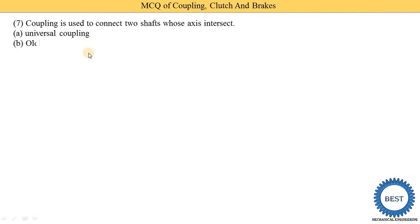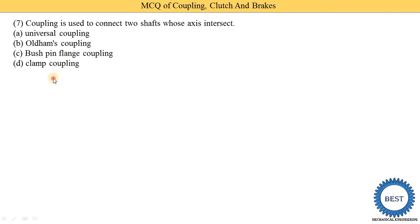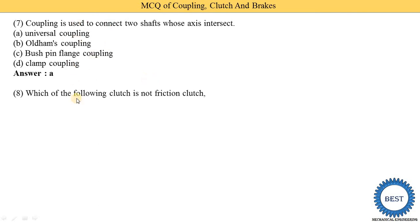Coupling is used to connect two shafts whose axes intersect. Options: universal coupling, Oldham coupling, bush pin flange coupling, and flange coupling. Option A is the correct answer. Universal coupling is used when the two shaft axes intersect — meaning one shaft is at a certain angle with another shaft, and in that case we use the universal coupling.